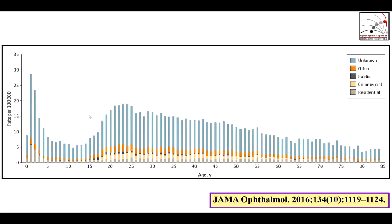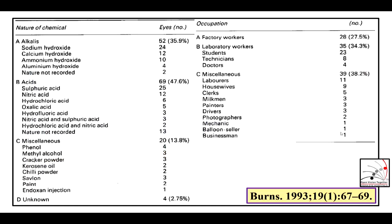There is a bimodal distribution with two peaks. One occurs in the pediatric age group, and the other in people in the most productive and active ages. There is a decline in the incidence of injuries as a person grows older.